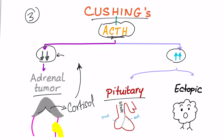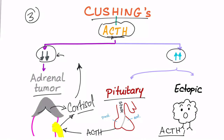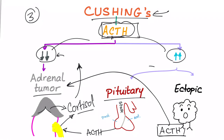If the ACTH level is high, the source may be the pituitary, because the pituitary secretes ACTH. High ACTH means the pituitary is telling the adrenals to increase cortisol secretion. Quick anatomy question: which part of the pituitary secretes ACTH — is it the anterior or the posterior? Please let me know in the comments. The other option is an ectopic tumor, which also secretes ACTH and drives the adrenals to produce more cortisol.